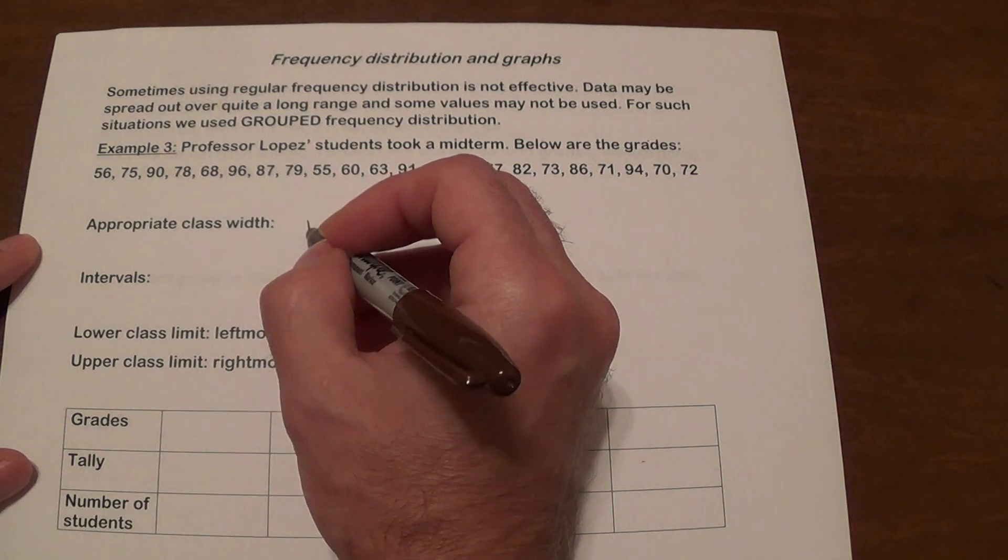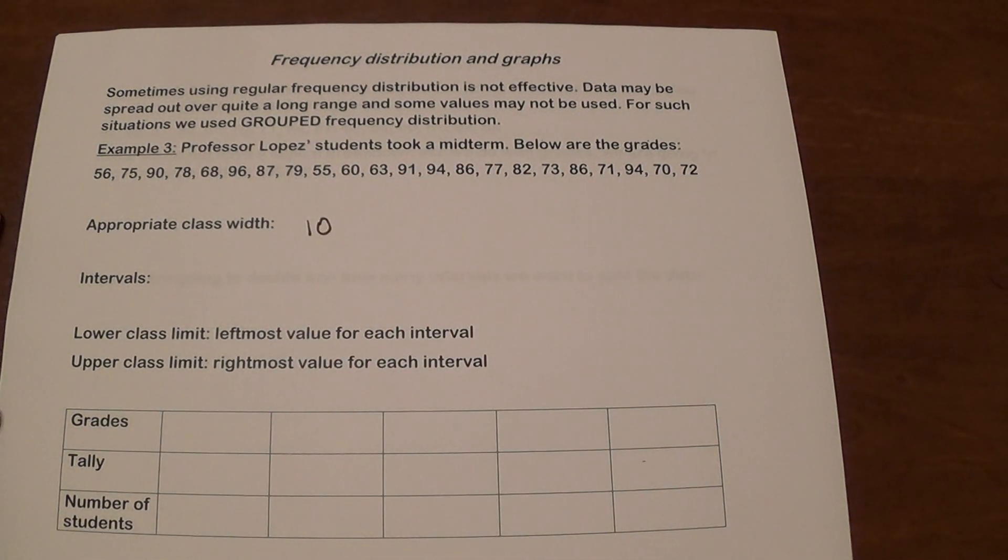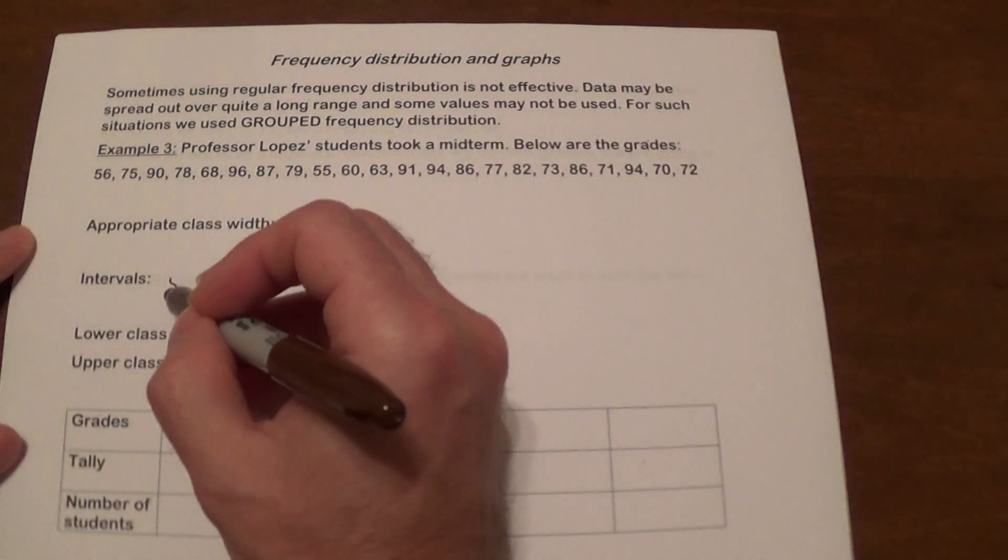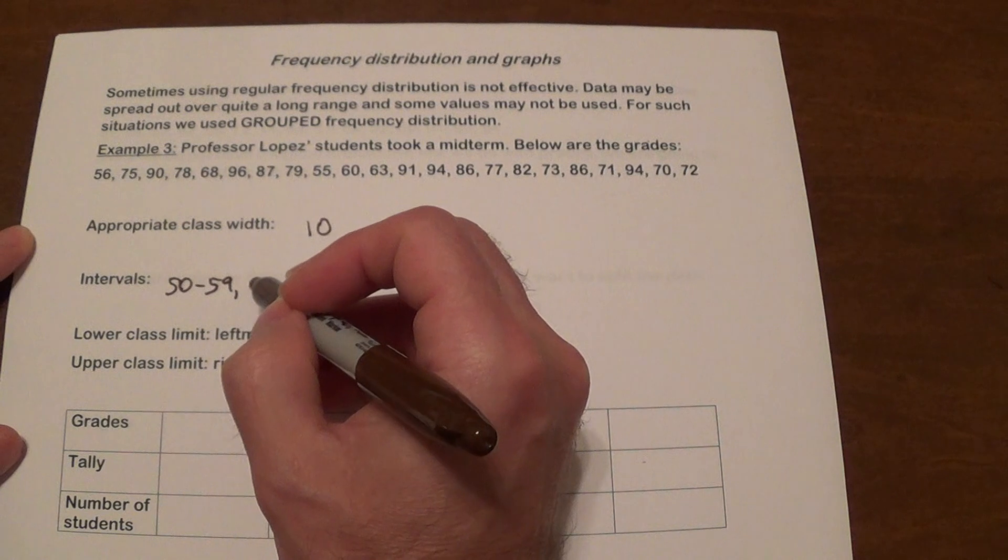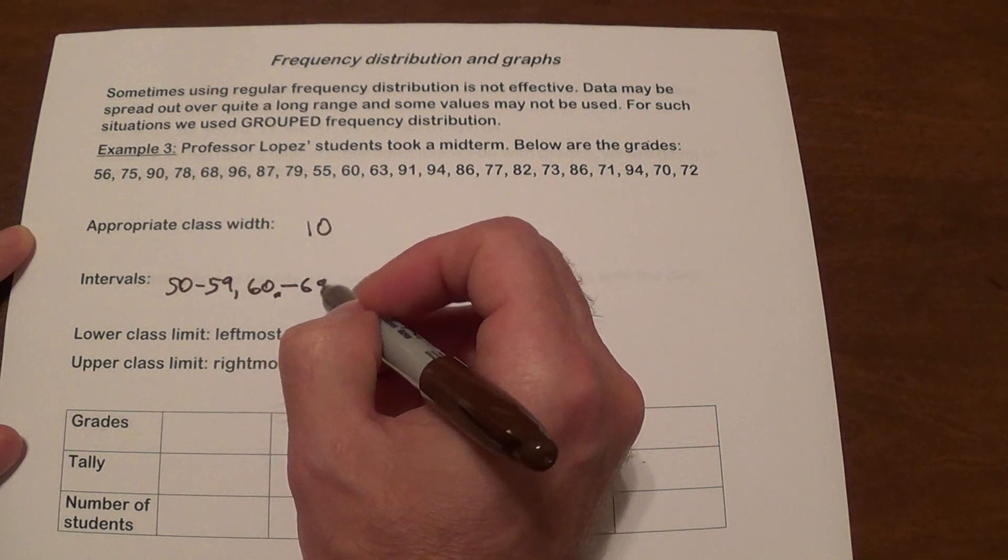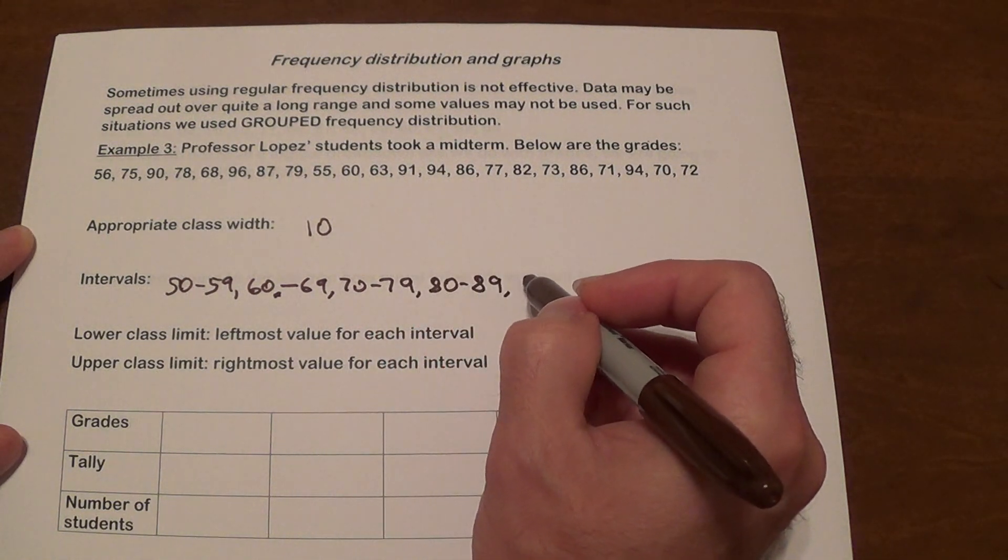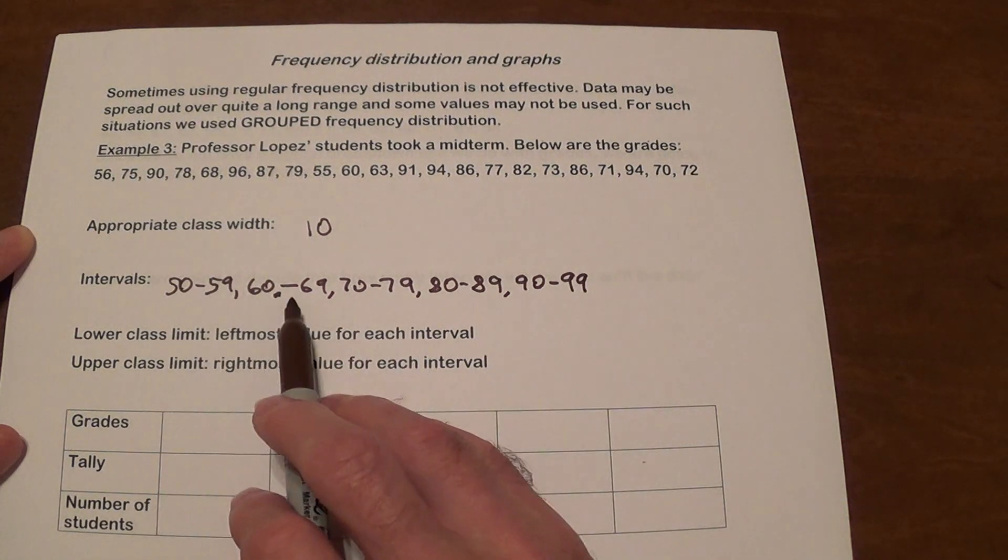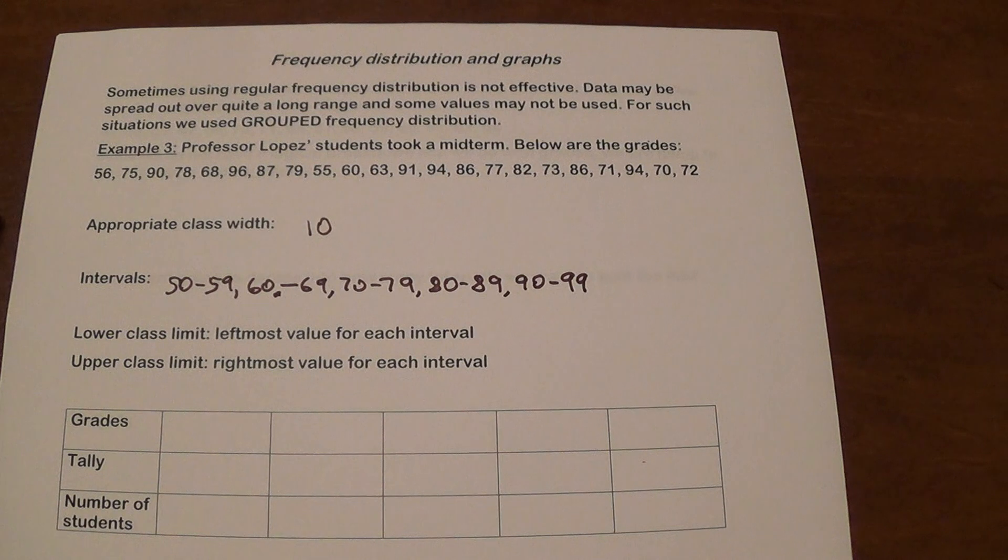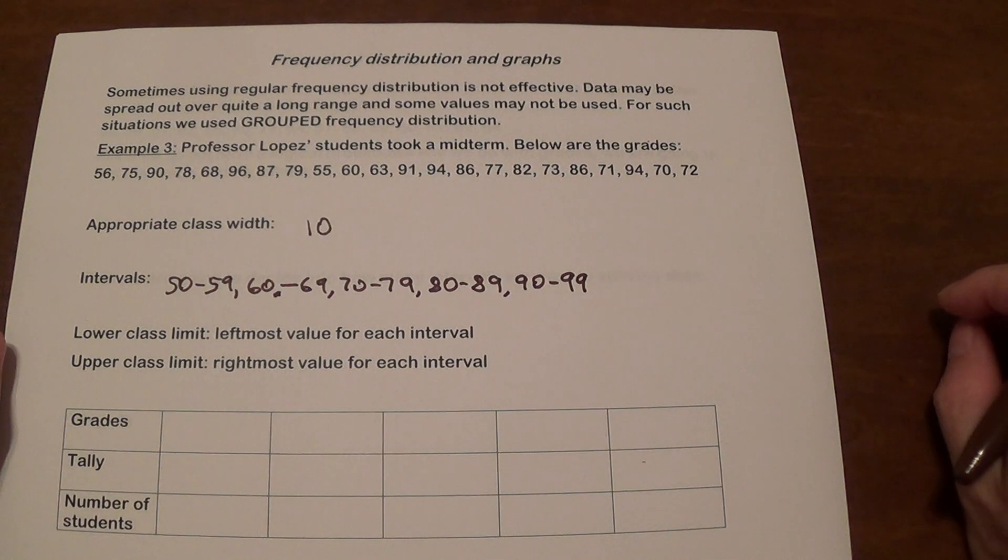Class width would be an appropriate value that we're going to group them by, you know, chunks of numbers. So here we'd probably say going by class width of 10 is going to be appropriate because we're going to have organized from 50 to 59, 60 to 69, 70 to 79, that would be in groups of 10. And this way we can only use five groups and that's going to give us a way to organize that in a lot better format.